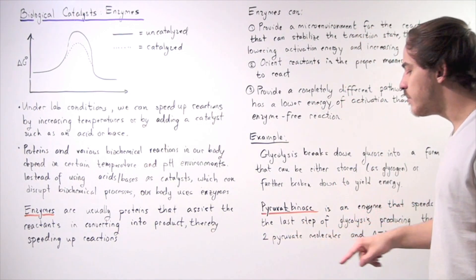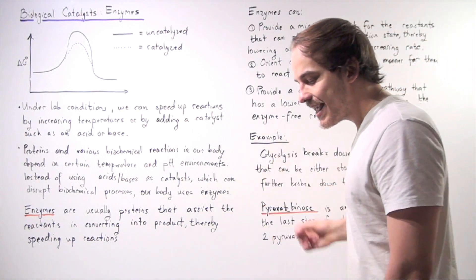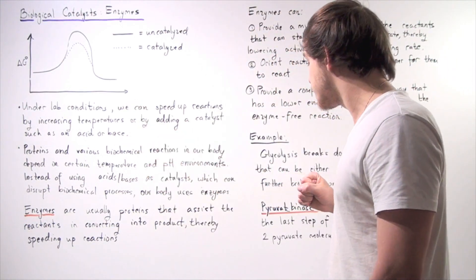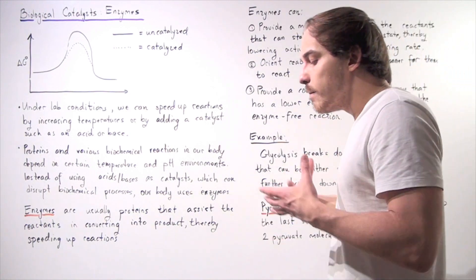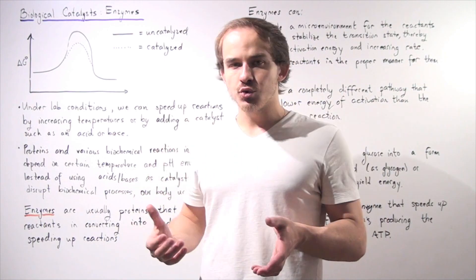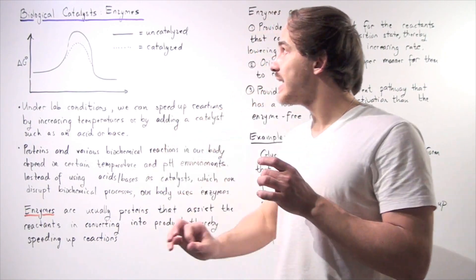These pyruvic molecules can further be broken down inside the mitochondria of our cells, which then can yield much more energy, many more molecules of ATP that can be eventually used for energy.